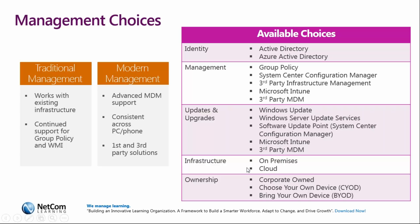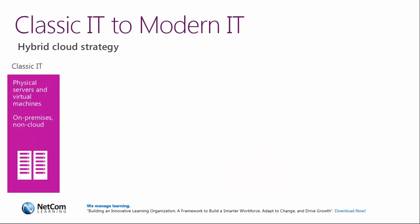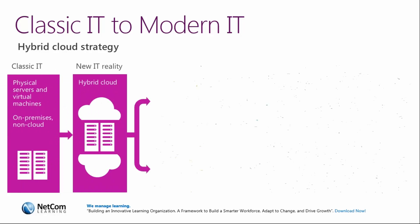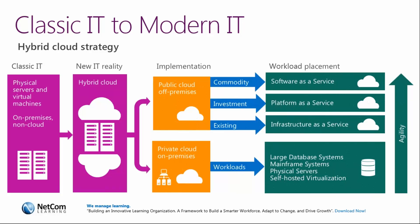And for the infrastructure, you need to be aware of your firewall, your networks, and how you are going to connect your solutions. Remember, for your cloud strategy, it's about moving from physical servers to virtual machines, then bringing those virtual machines to the cloud, and deciding whether you are going to use infrastructure as a service, platform as a service, or software as a service. Those are the options you need to plan for.